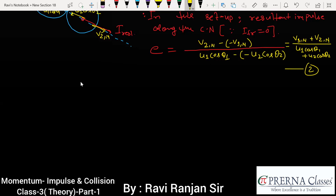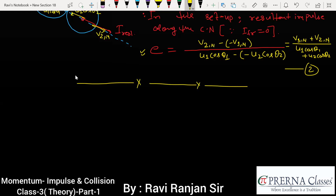That is the basic concept of 2D collision. This point is important: if the resultant impulse is not normal at the collision point, then you have to apply it in the resultant direction, and the velocity of approach and velocity of separation must be considered in that direction. In 2D collision problems, you may be asked: magnitude of velocity after impact, loss of energy, coefficient of restitution, or the angle of deflection.